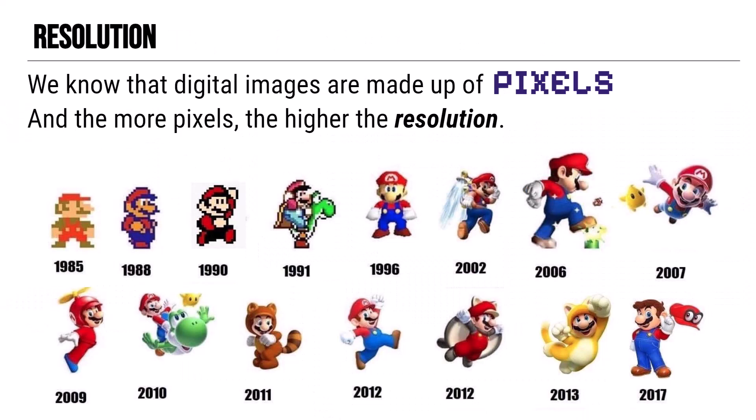The first thing we need to talk about is resolution. When we do video editing, we are editing a certain amount of resolution, and we should know that digital images are made up of pixels — those tiny little squares. The more pixels you have, the higher the resolution. This series of Mario images shows how as computers became more powerful, more pixels made him look better, increasing the resolution. Video editing is very similar.